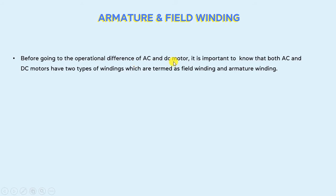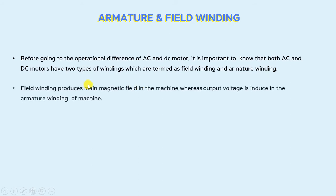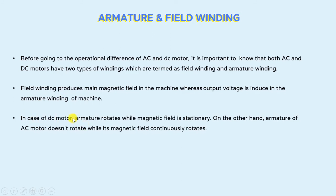Before going to the operational difference of AC and DC motors, it is important to know that both AC and DC motors have two types of winding: field winding and armature winding. Field winding produces the main magnetic field in the machine, whereas output voltage is induced in the armature of the machine. In the case of a DC motor, the armature rotates while the magnetic field is stationary. On the other hand, in an AC motor, the armature does not rotate while its magnetic field continuously rotates.